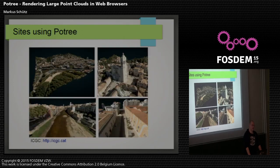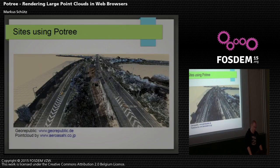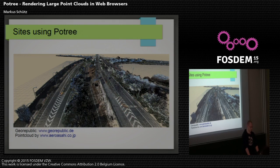This is from ICGC — this is not publicly available yet, but hopefully by tomorrow or in the next few days. This is from TreePoint; they're currently developing an online LiDAR platform and want to use Potree to display the point cloud data in web browsers. And this is from G Republic, who have also used Potree to display point clouds in their web interface — in this case for Japanese highways.